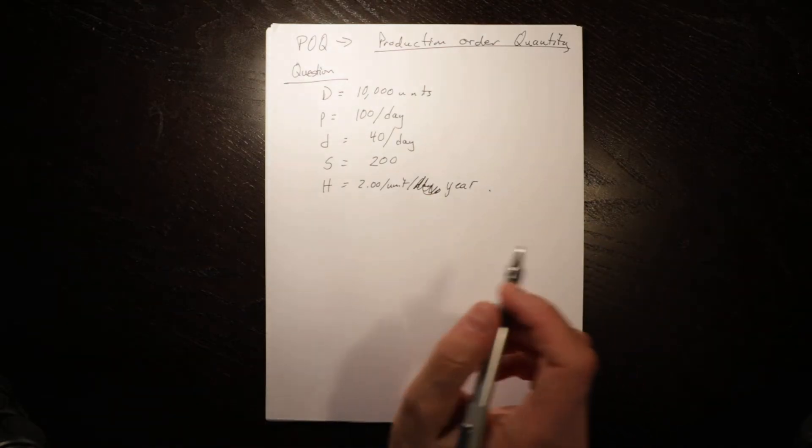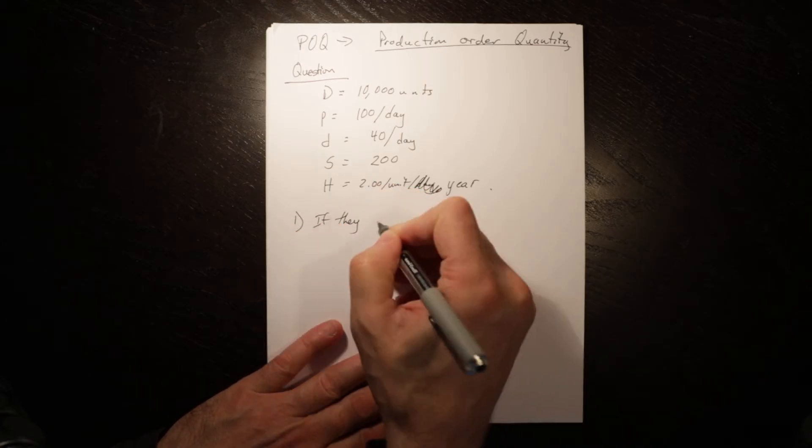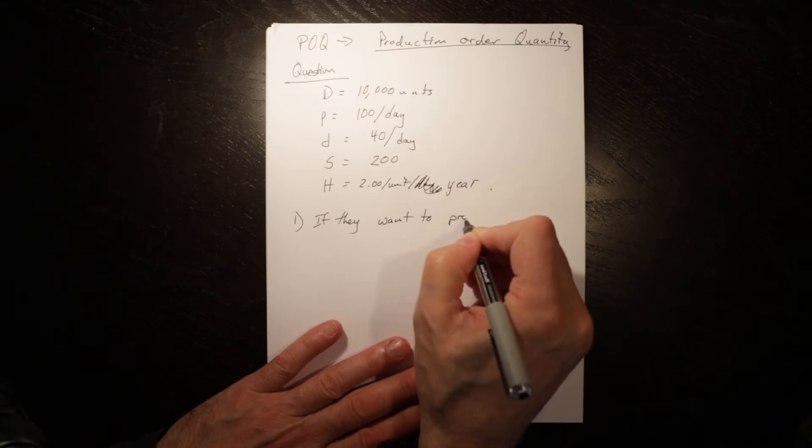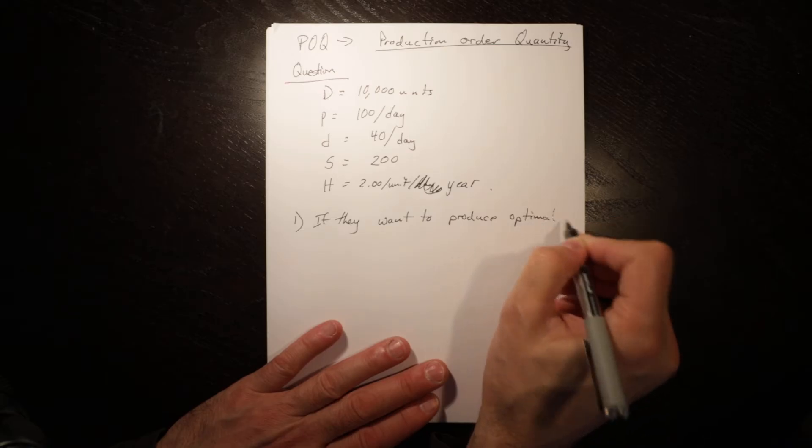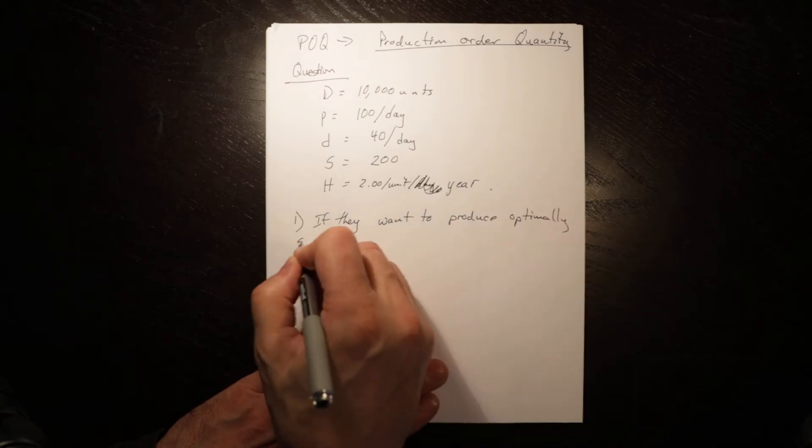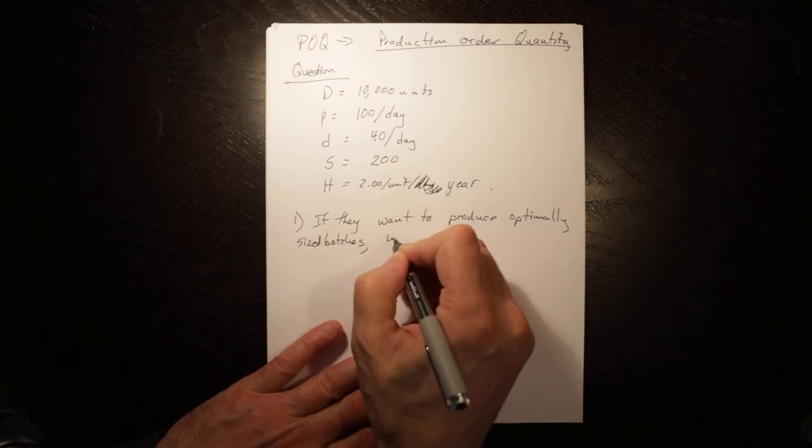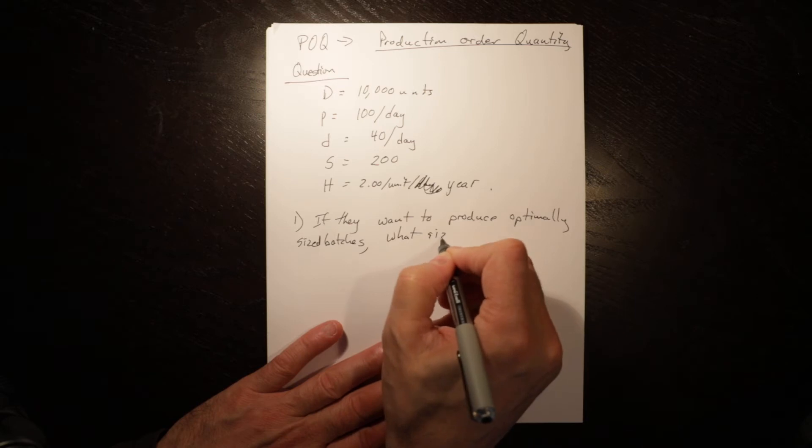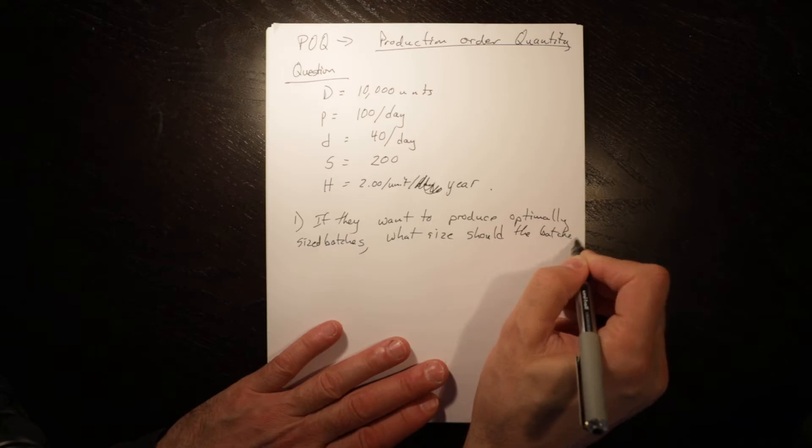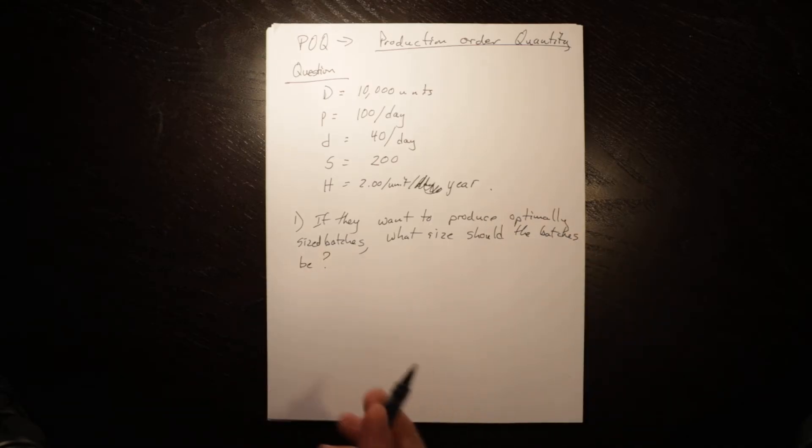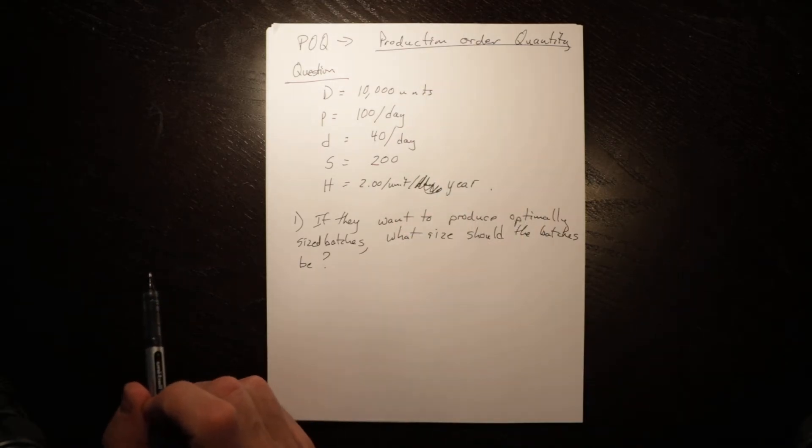So then you might get a question. One, if they want to produce optimally sized batches, what size should the batches be?